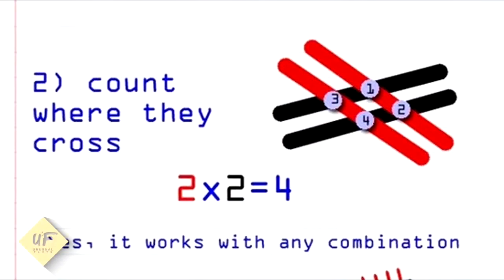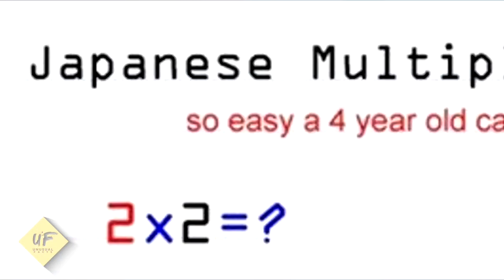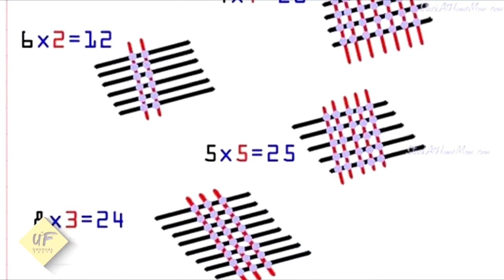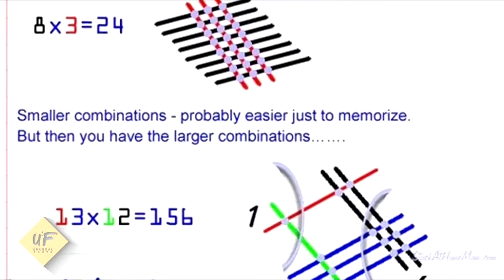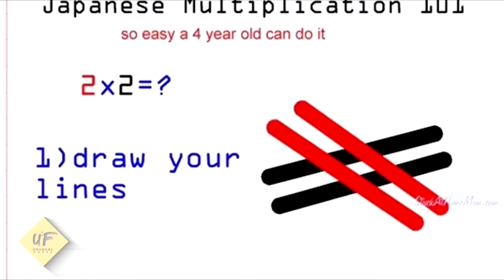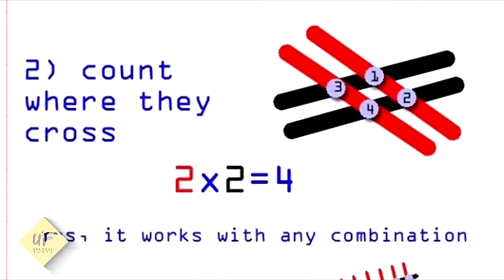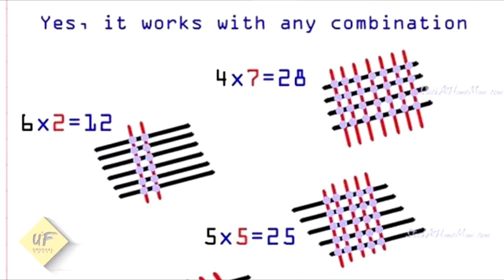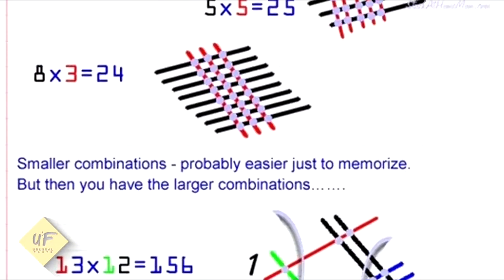Now you count where those lines crossed: one, two, three, four. Two times two is four, and it works with any combination. Give it a try. Four times seven is 28, six times two is 12, five times five is 25, and eight times three is 24. Some of those smaller combinations are probably just easier to memorize.